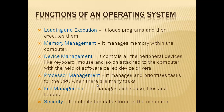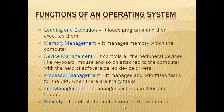Processor management manages and prioritizes tasks for the CPU when there are many tasks. For example, the first priority task will be executed first, then the second, and so on — that priority is given by the operating system. File management manages disk space, files, and folders. Security protects the data stored in the computer; the operating system ensures your data won't get deleted or affected by any harmful virus.